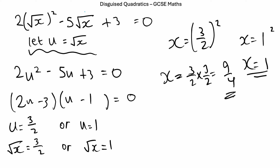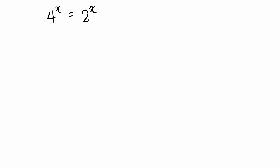So all we are really doing with disguised quadratics is — when we have something complicated that we can replace with a simpler letter — we just get a quadratic equation and solve it from there. Let's take a look at one more challenging question: 4 to the power of x equals 2 to the power of x plus 56. This takes on a slightly different form, so it might confuse you. But we want to get our powers all the same so we can simplify.